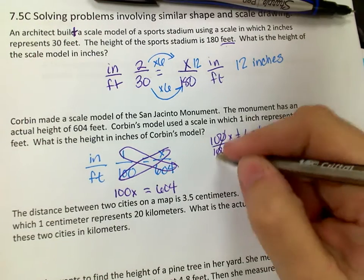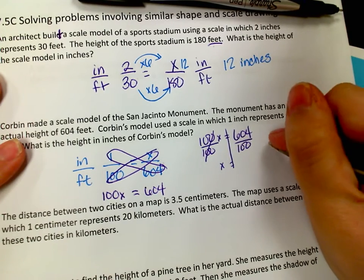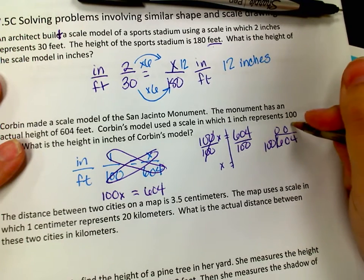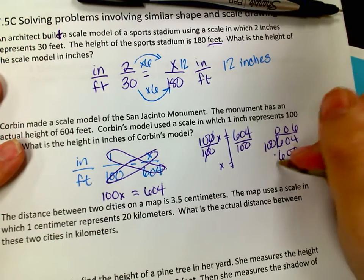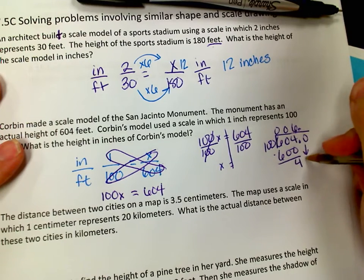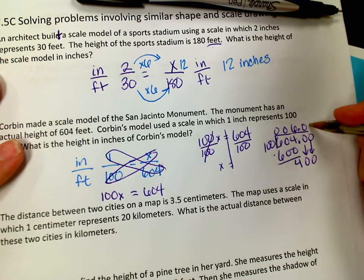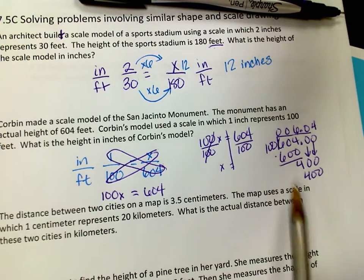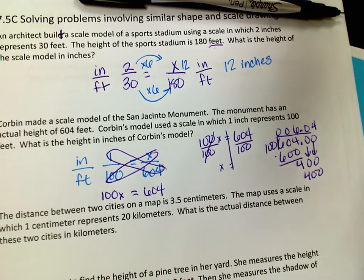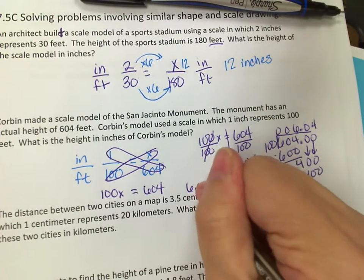To solve, divide both sides by 100. If I do 604 divided by 100: 100 goes into 604 six times, giving 600, subtract to get 4, then adding a decimal and zeros gives 40, then 400, which is 4 times. So the result is 6.04 — dividing by 100 just moves the decimal two places. The answer is 6.04 inches, the height of the model.